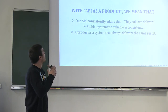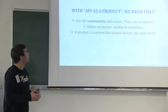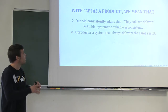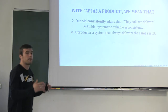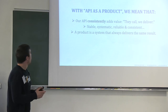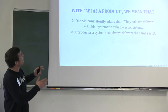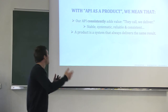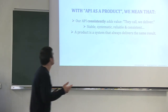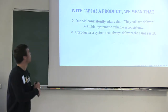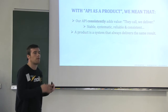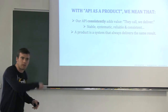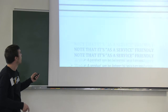Something you can deliver that is stable, systematic, reliable, and consistent — these are the characteristics of a product, I believe. Another sentence I thought was nice to sum up the thing: a product is a system that always delivers the same results. It's always the same. It's the characteristic of a system.